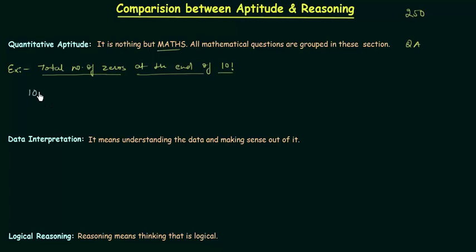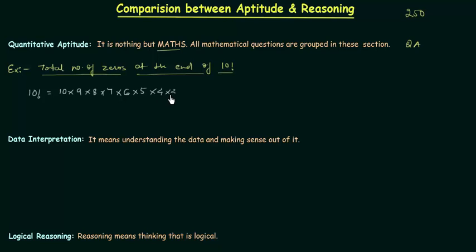10 factorial can be written as 10 multiplied by 9 multiplied by 8 multiplied by 7, 6, 5, 4, 3, 2, and finally 1.